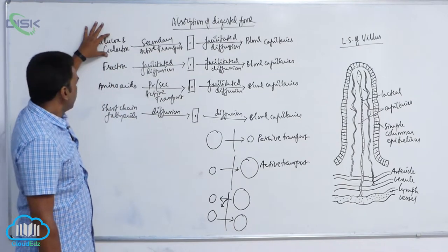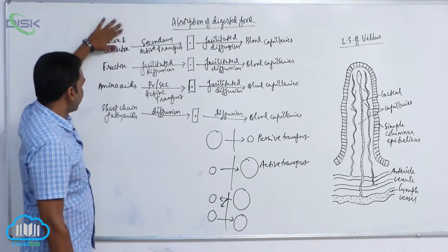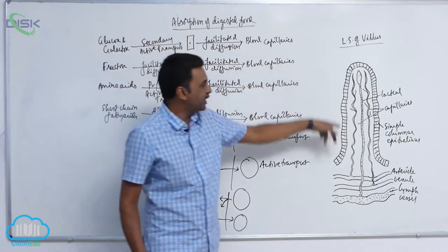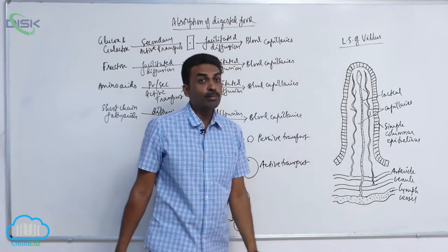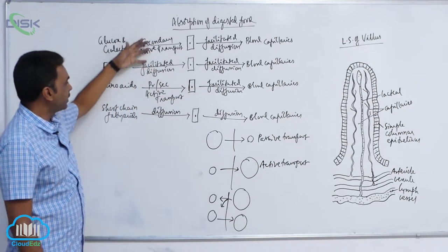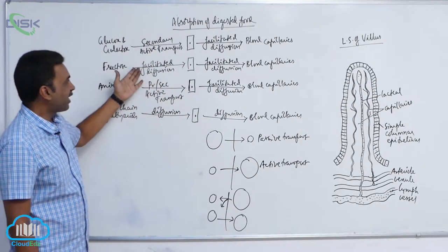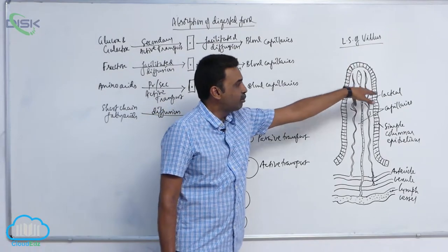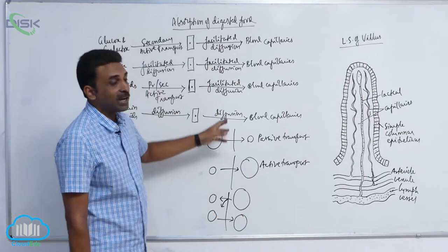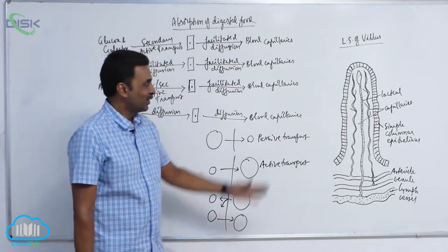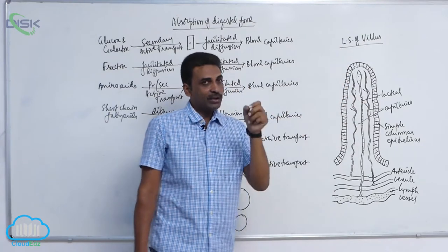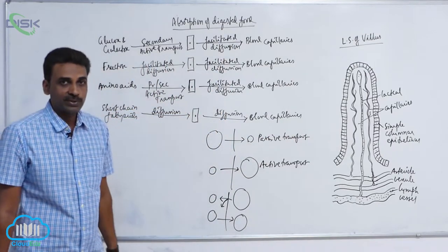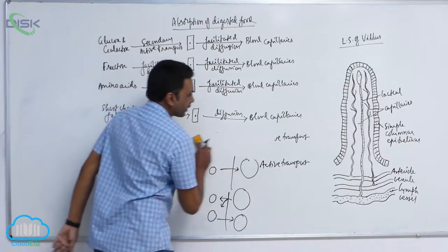Glucose, galactose, fructose, amino acids, and short chain fatty acids — remember, all these are finally entering into blood capillaries. But they are not directly entering; they first enter into epithelial cells of villi and from there enter into blood capillaries. Some enter by simple diffusion, some by facilitated diffusion, and some by primary or secondary active transport. Movement from epithelial cells into blood capillaries occurs by simple diffusion or, in most cases, by facilitated diffusion.